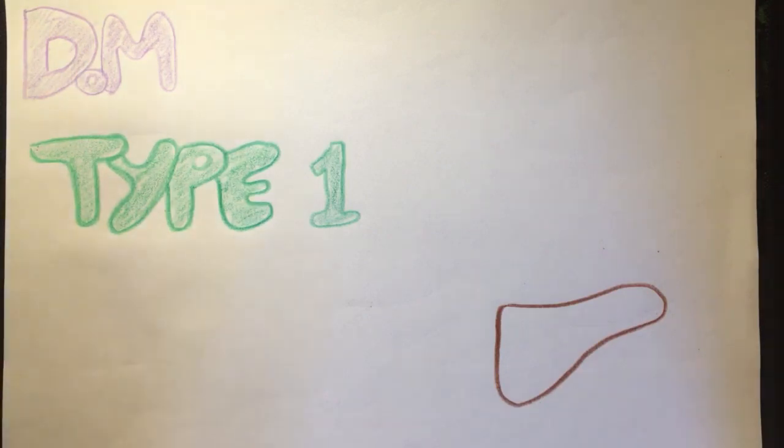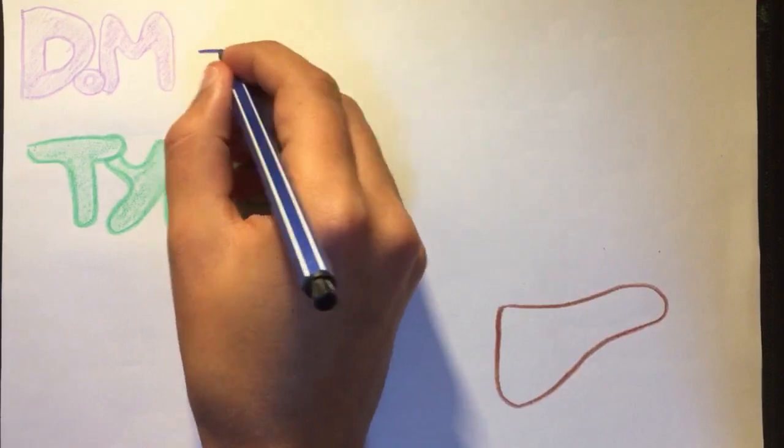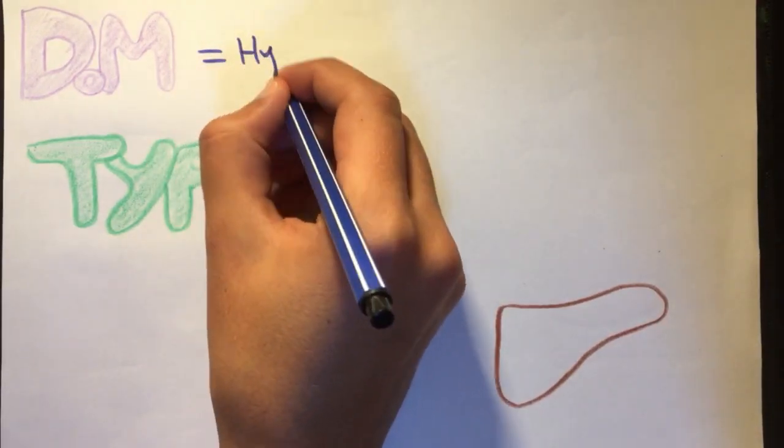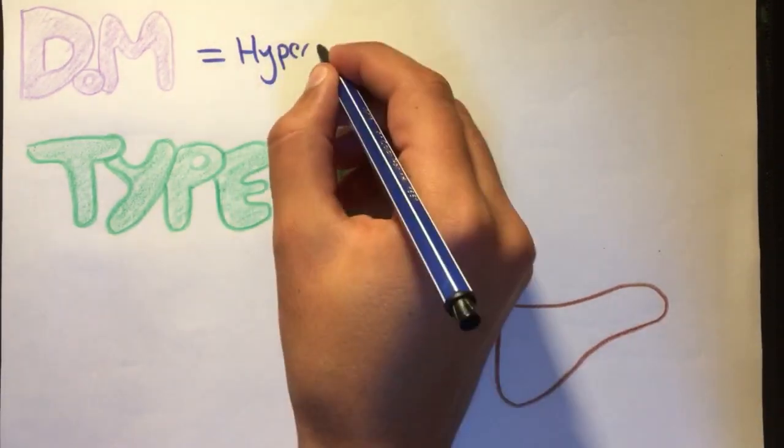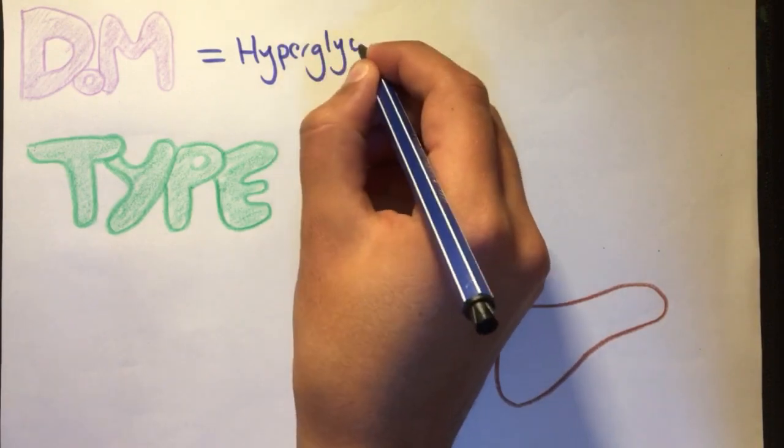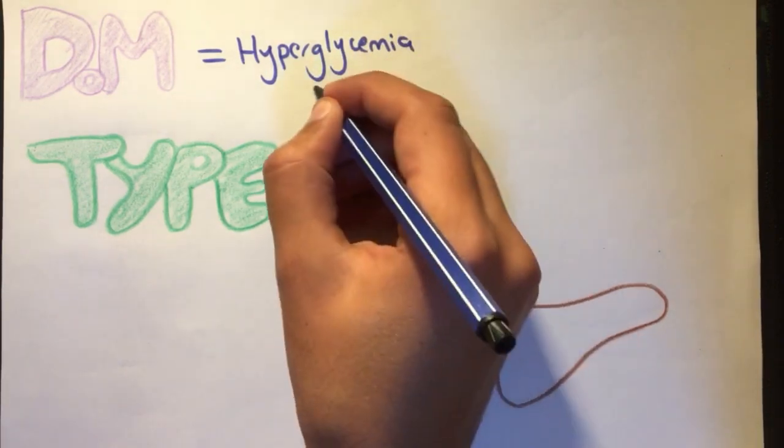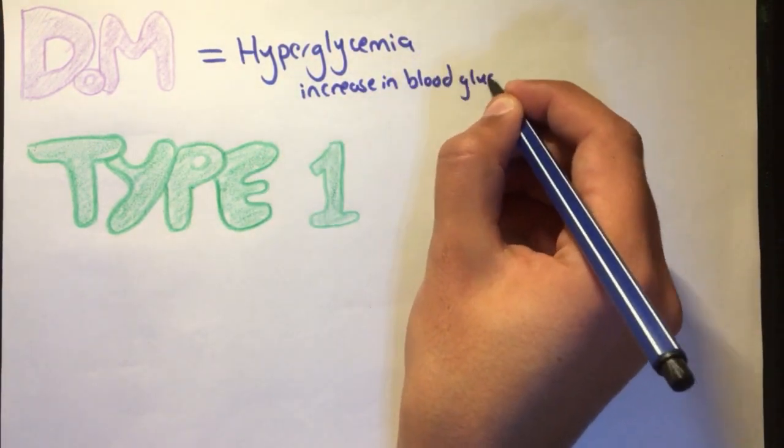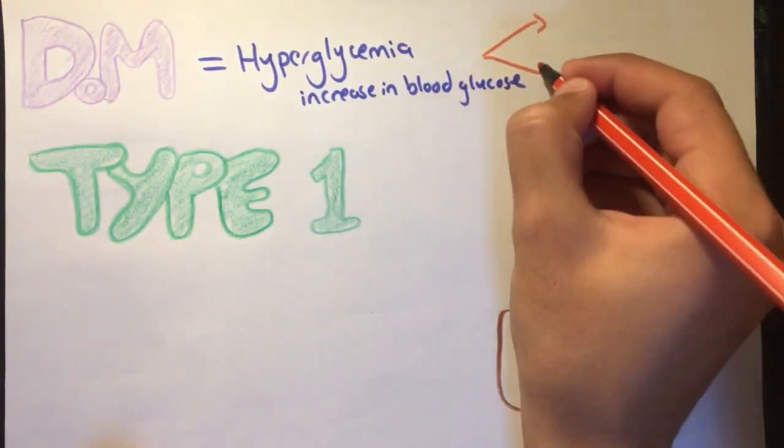Diabetes mellitus is not a single disease. Rather, it's a group of metabolic disorders that share the same feature of elevated blood glucose levels, also known as hyperglycemia. There are two main types, which are type 1 and type 2 diabetes.